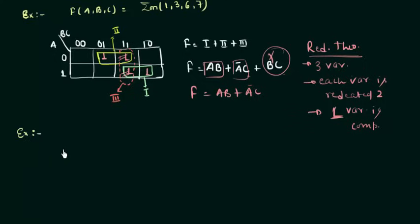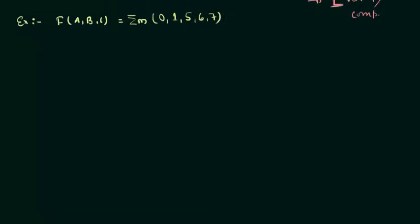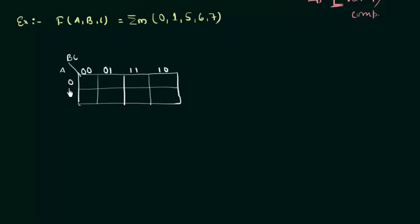And the second example is function F with variables A, B, C is equal to summation M: 0, 1, 5, 6, 7. So again you can see that 3 variables are involved. So we have to make an 8-cell K-map. Now we will write the variables A, B, C, MSB first and LSB last. And the values of this variable, or you can say the different combinations of this variable.